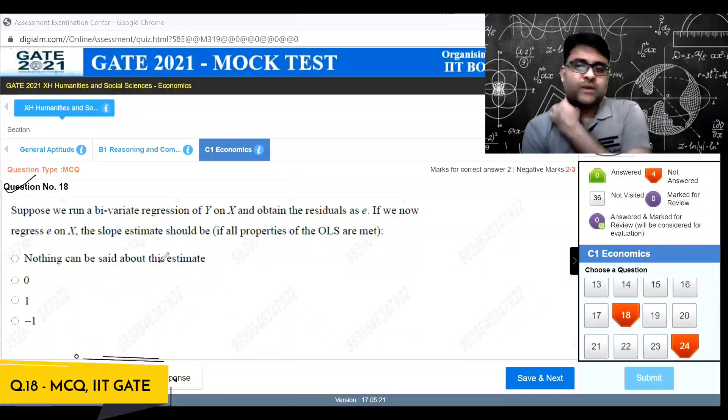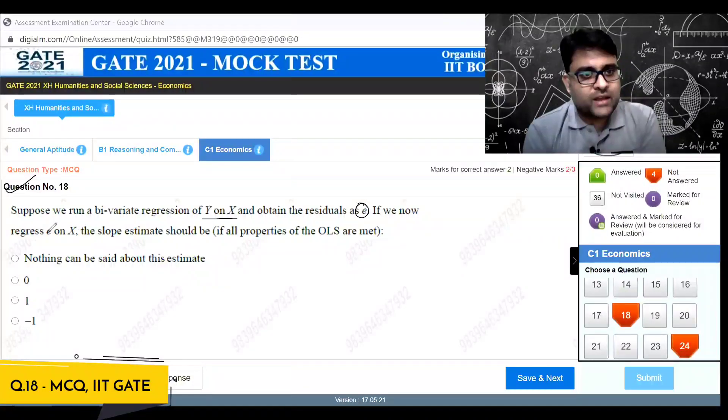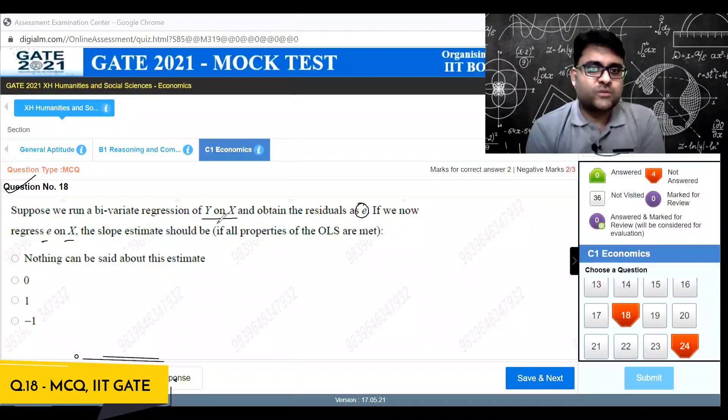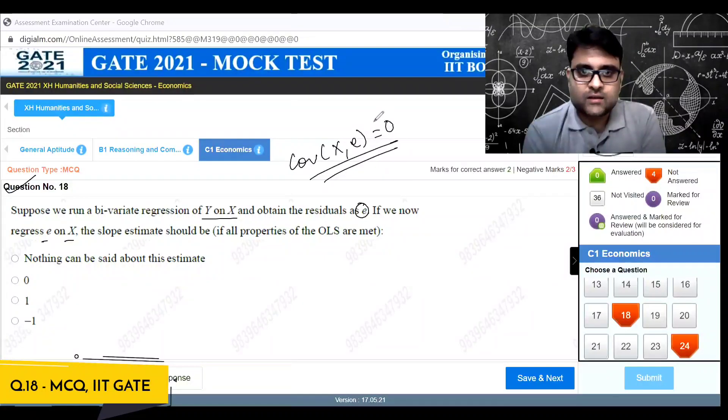IIT Gate 2021 mock economic section question 18. Suppose we run a bivariate regression of Y on X and obtain the residual E. If we now regress E on X, the slope estimate should be, as I said, covariance X-E should be equal to zero. If covariance X-E is equal to zero, the slope estimate will be zero. The residuals with X will not have any covariance, will not have any correlation, therefore the slope estimate should be zero.